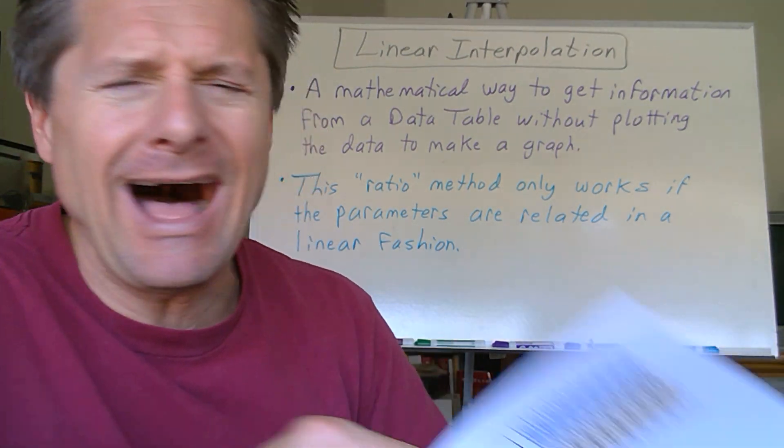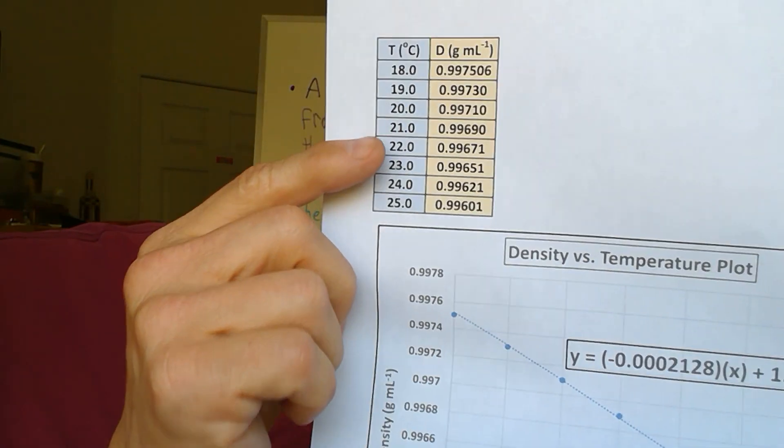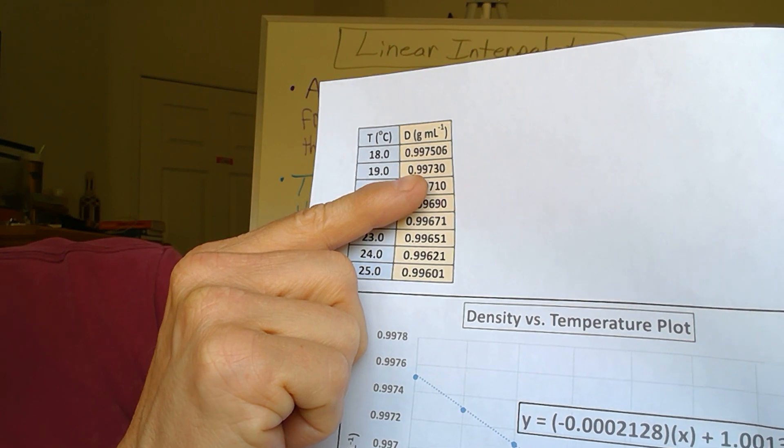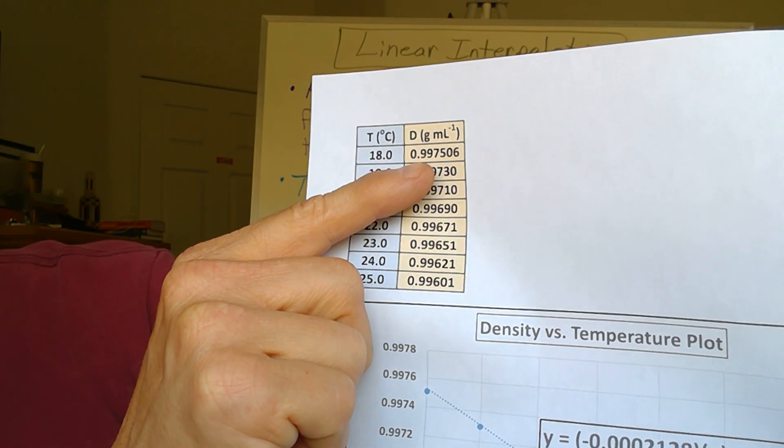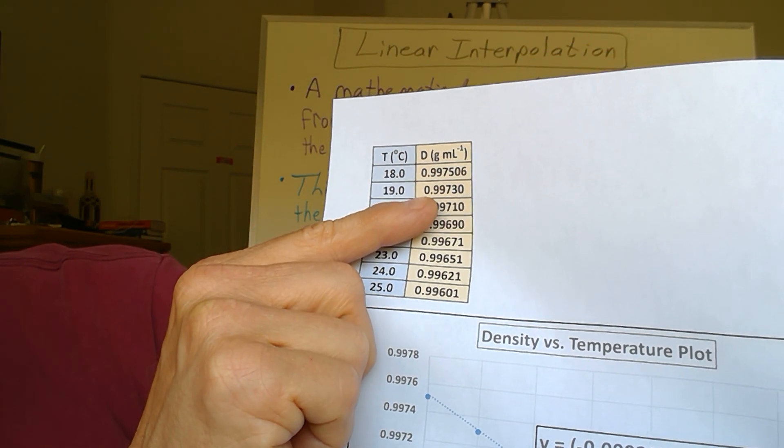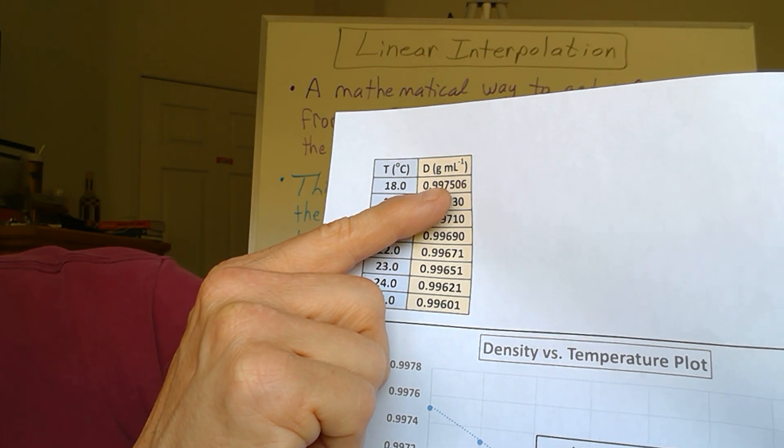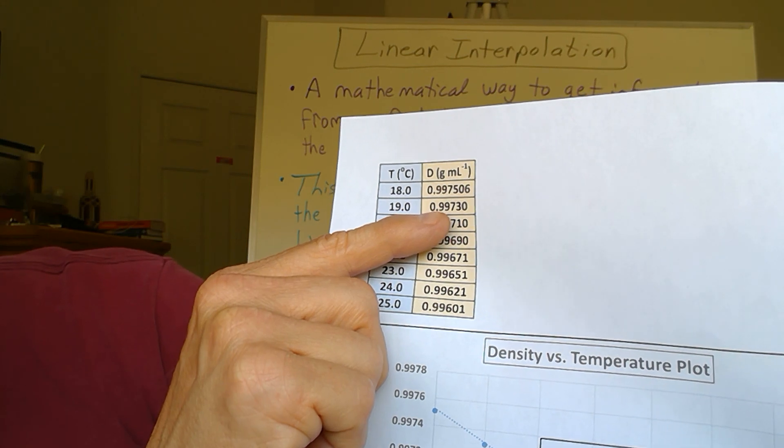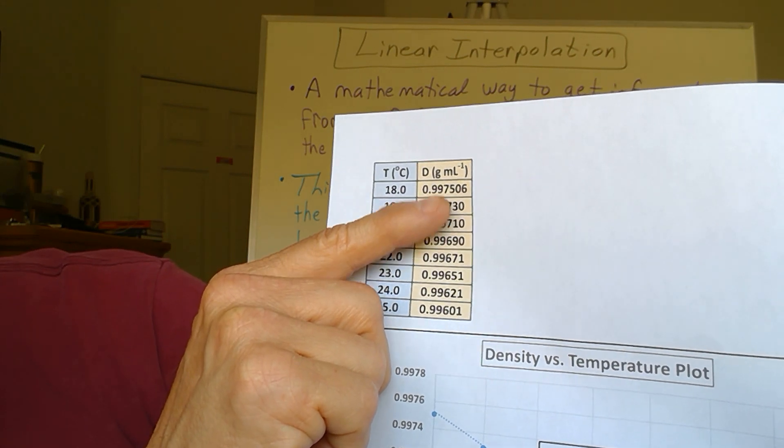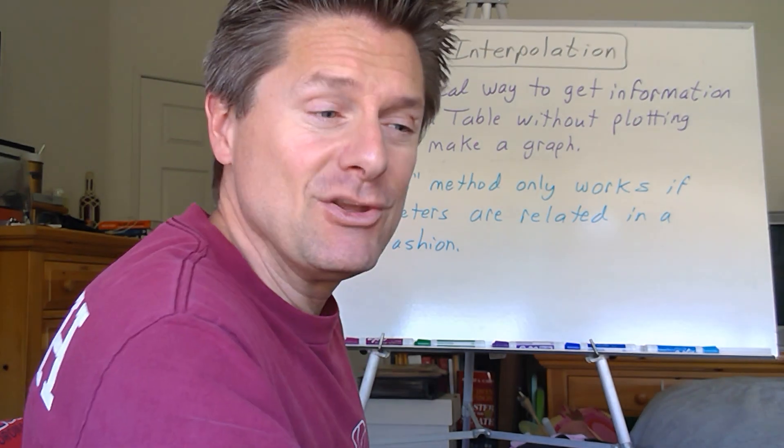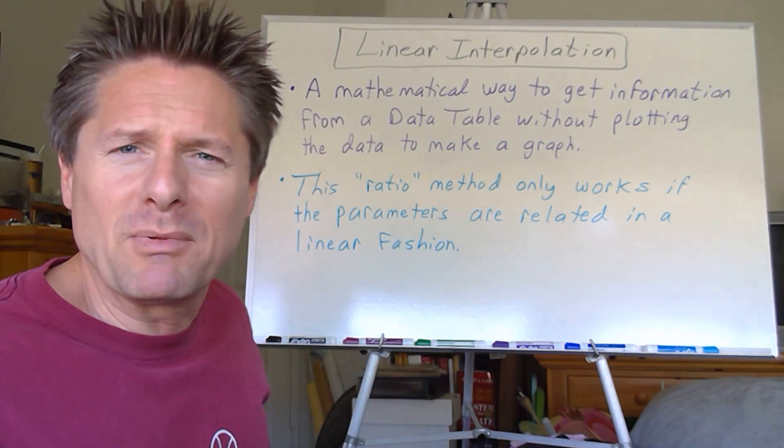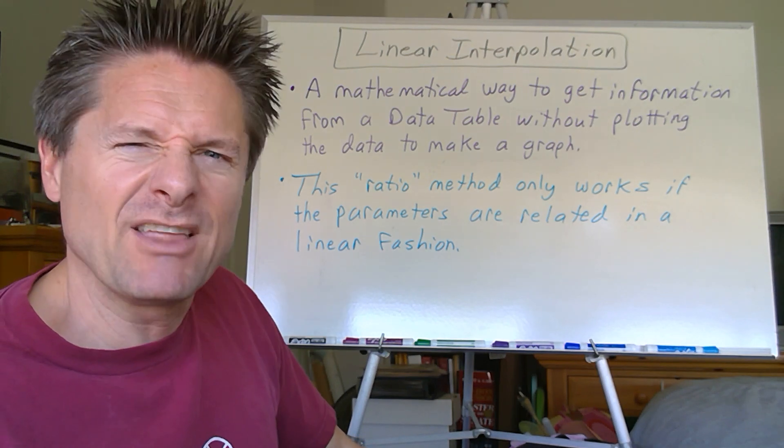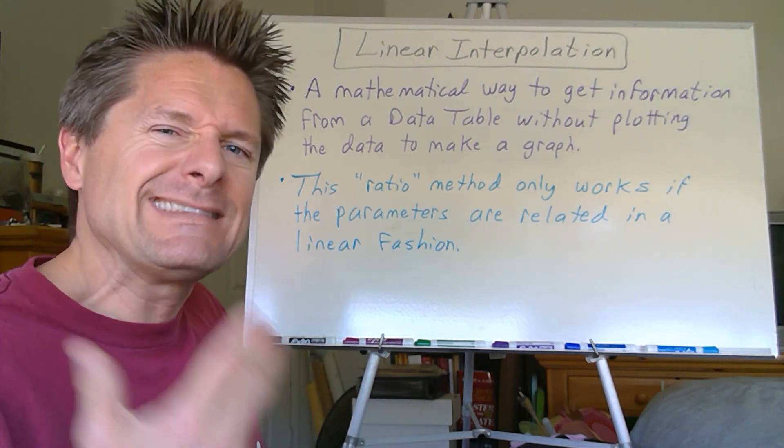And then we can just plug in the value for the temperature and calculate the density that falls in between, like at 22.6 degrees Celsius or something. You can kind of eyeball it though, right? You can see right here if I'm at 18.5, it's going to be less than 0.997506 but greater than 0.9973. So you can see it's going to be in between the two.